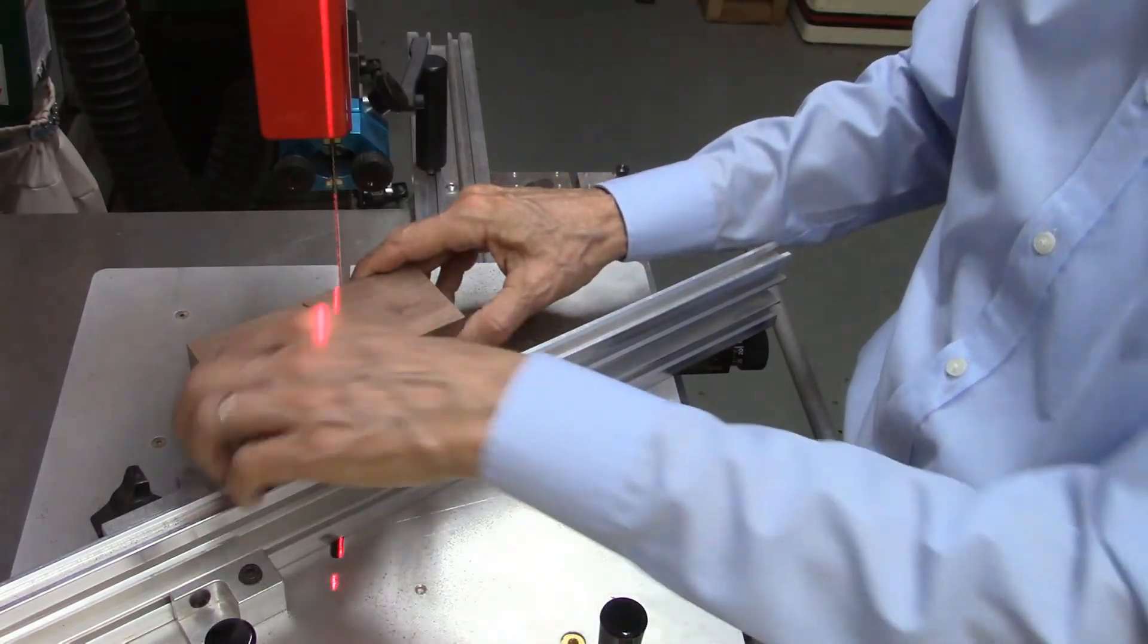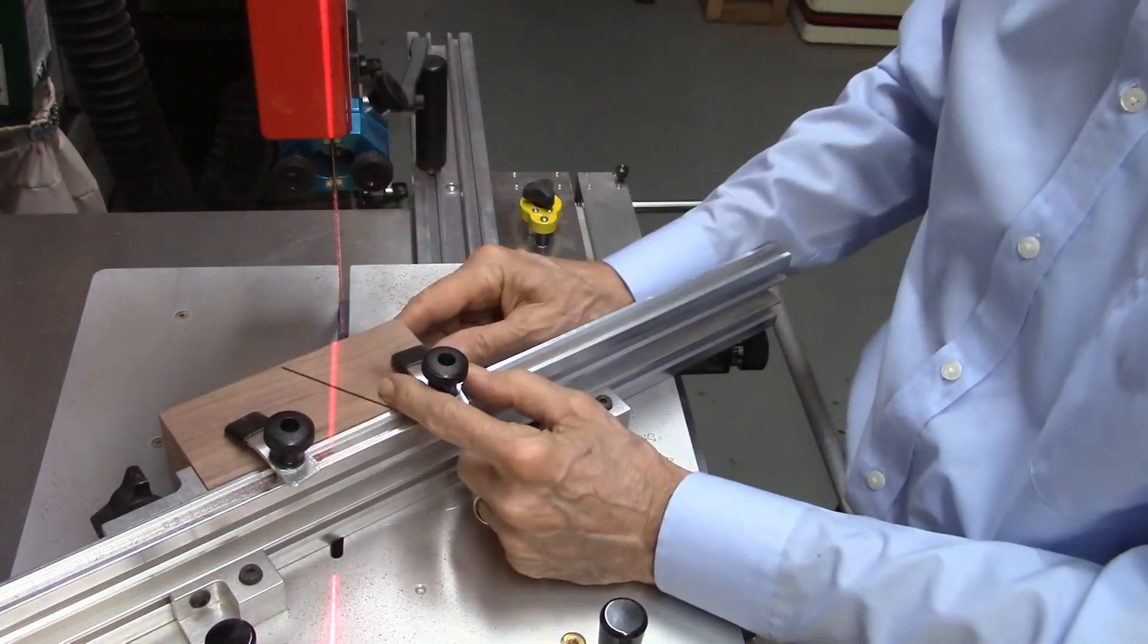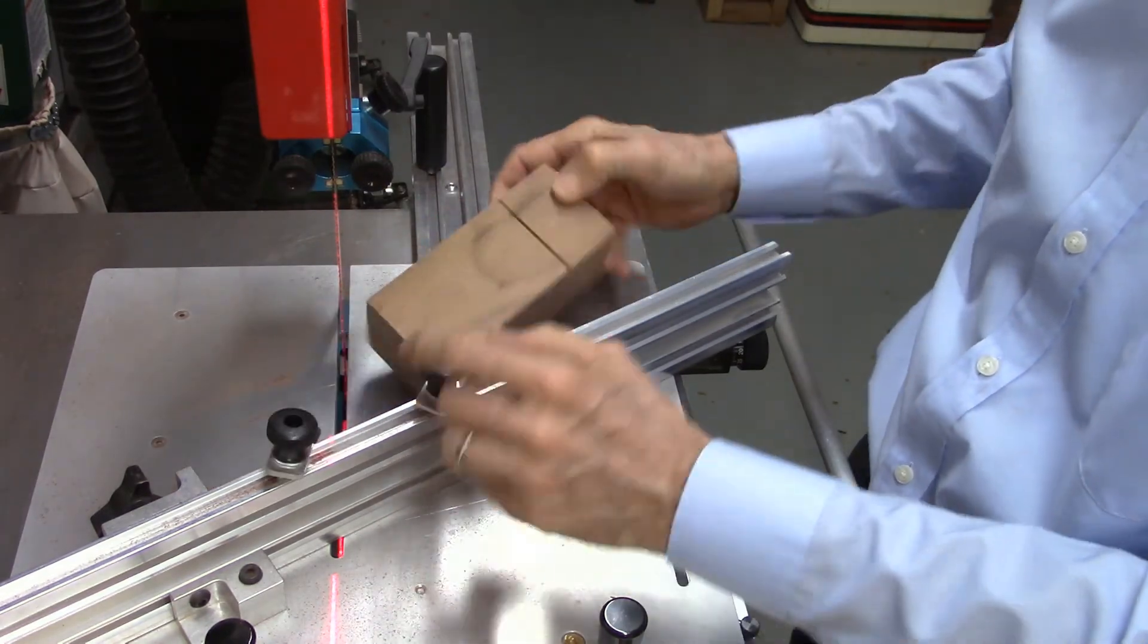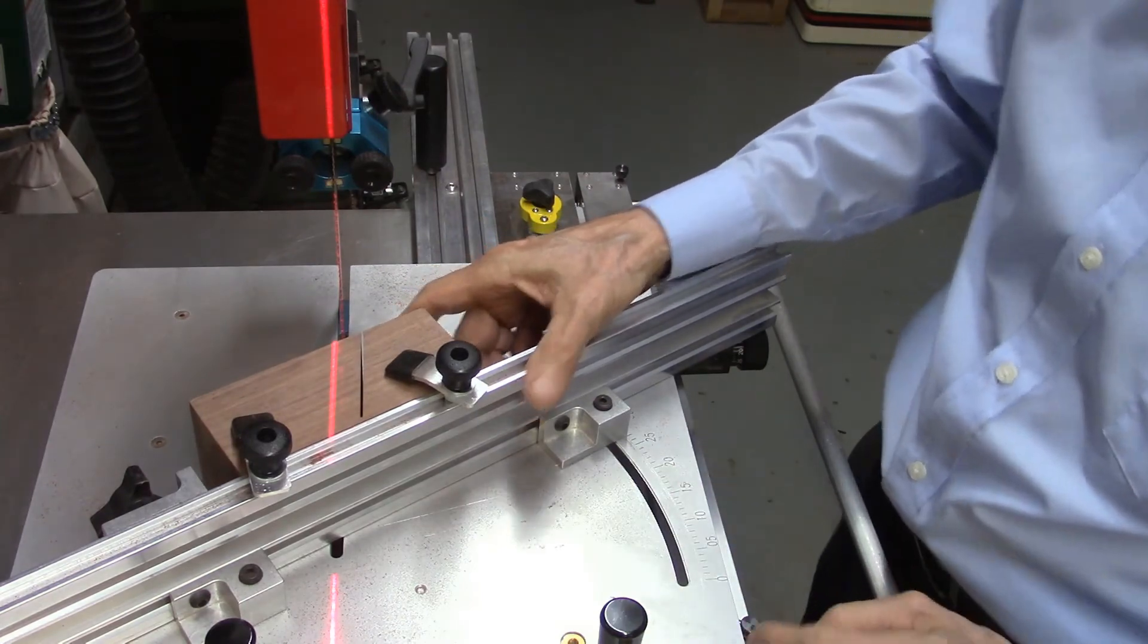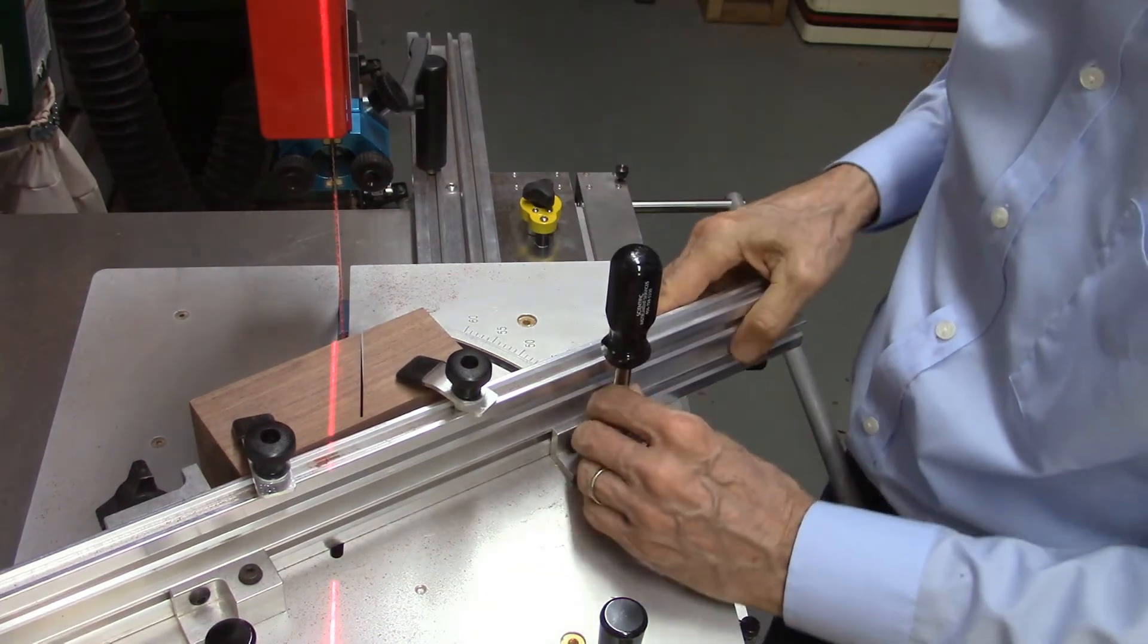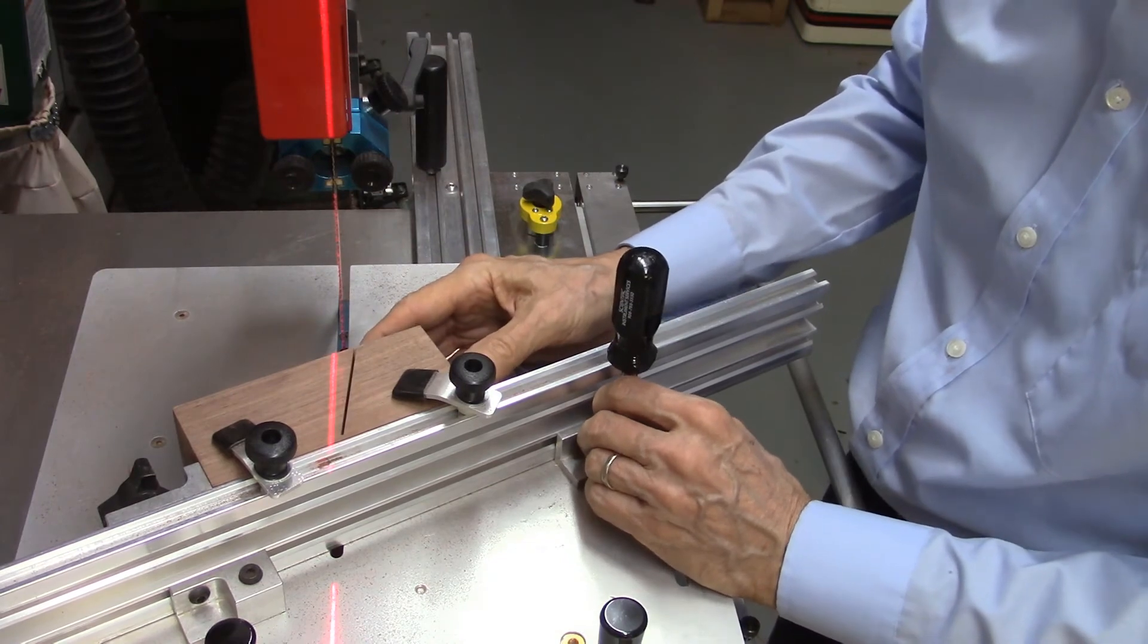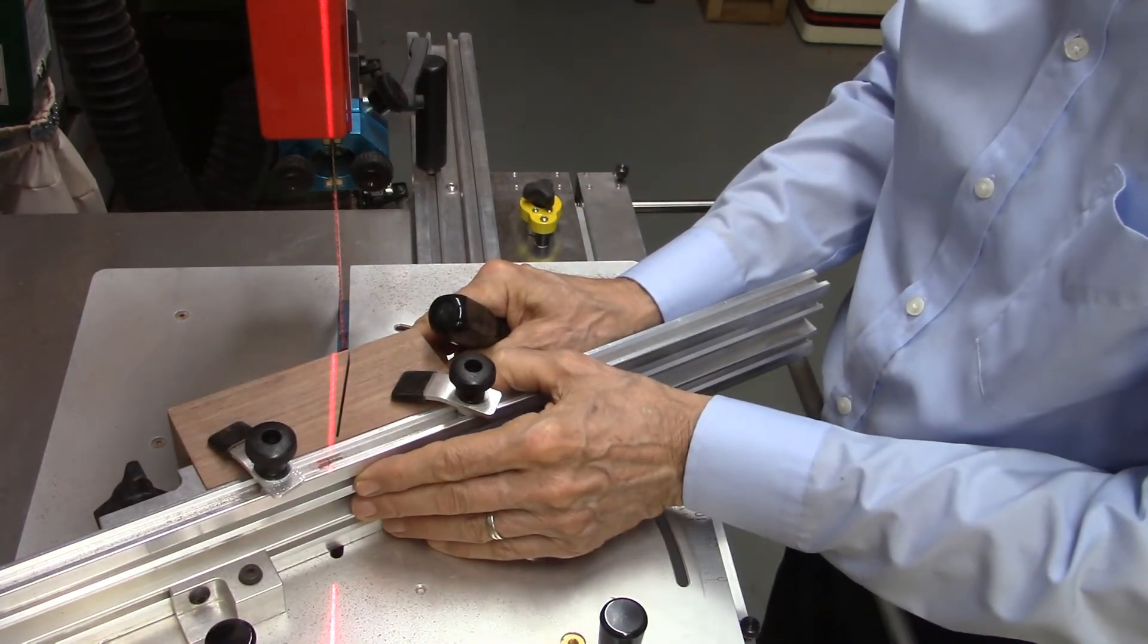So what makes this laser system nice is when I want to cut the opposite angle, I can make sure it aligns perfectly in the middle, or even better than that, if I wanted to cut some slots at a different angle, I could align my beam to just miss it.